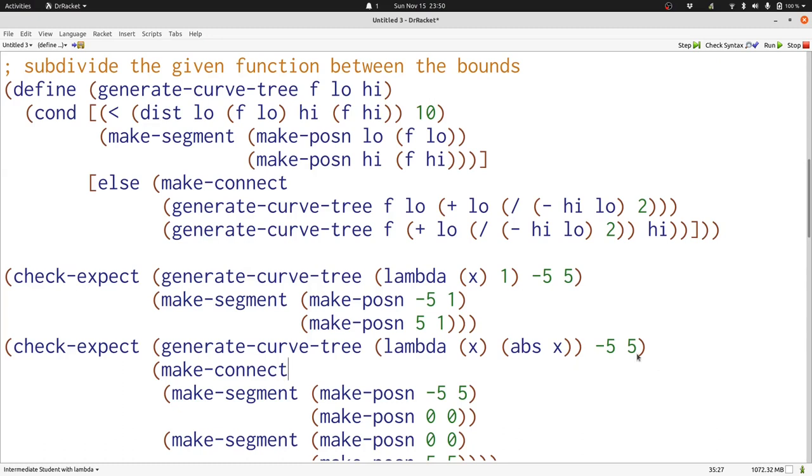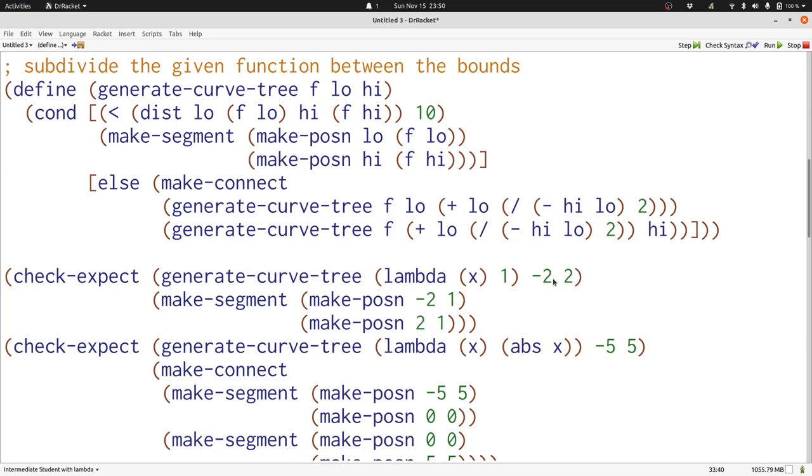And now when we run our program, all our tests will pass. If we hadn't changed our example there, it would have generated a curve tree with one connect and two segments, each of which were going along the straight line described by lambda x 1.